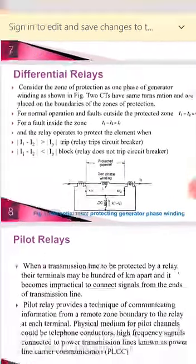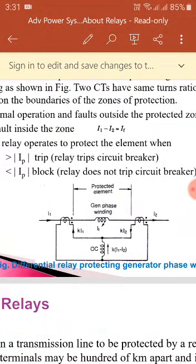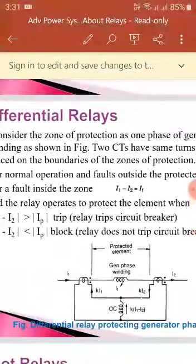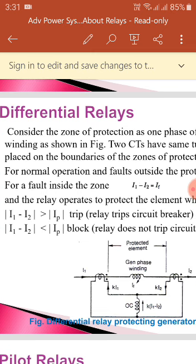In case of differential relays, this is the winding to be protected and in this winding there should be no circulating current when there is no fault. So, the difference current has to be greater than the tripping current for the relay to trip the circuit breaker.